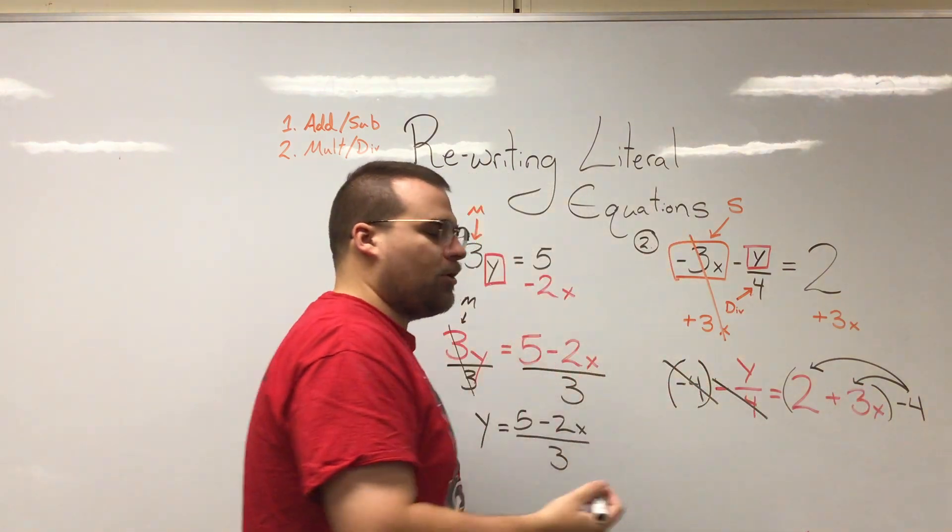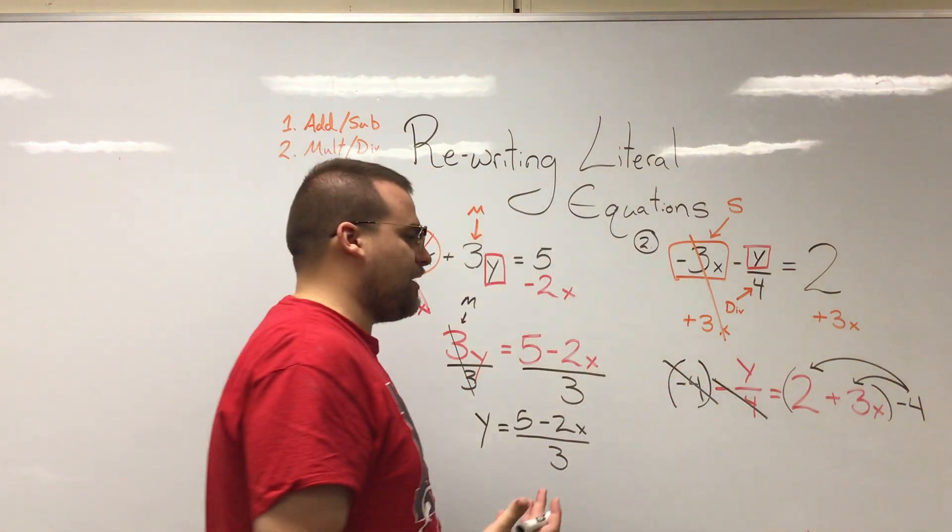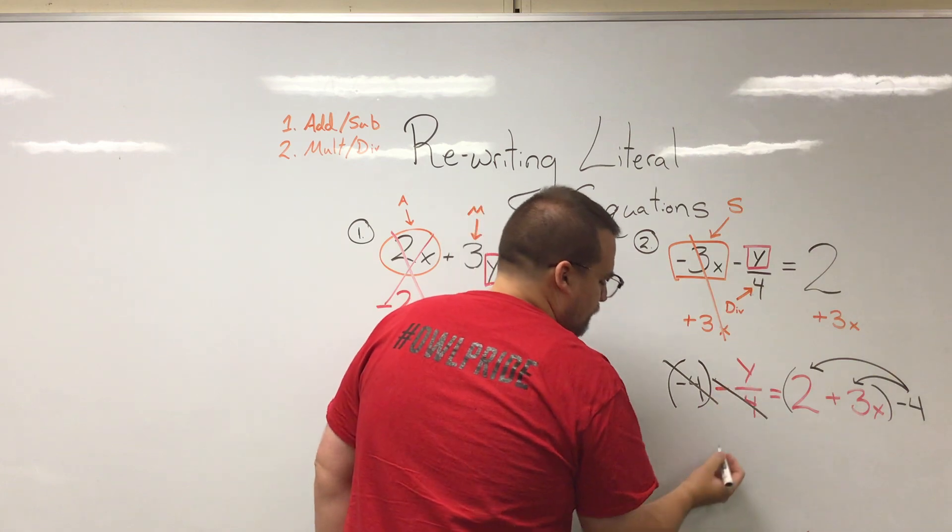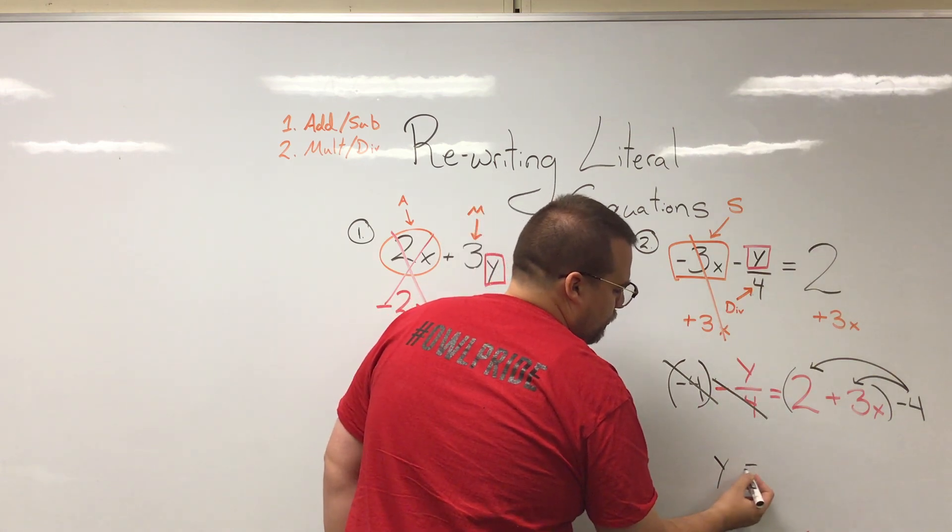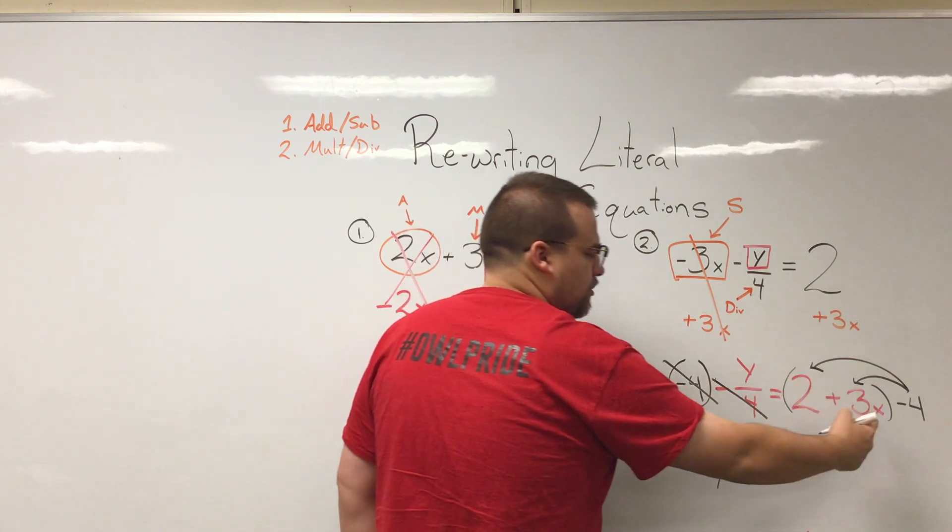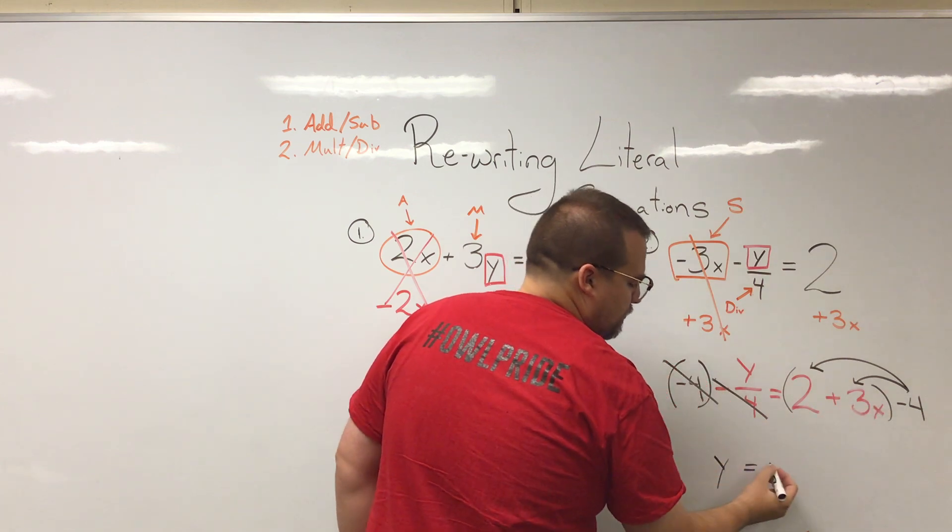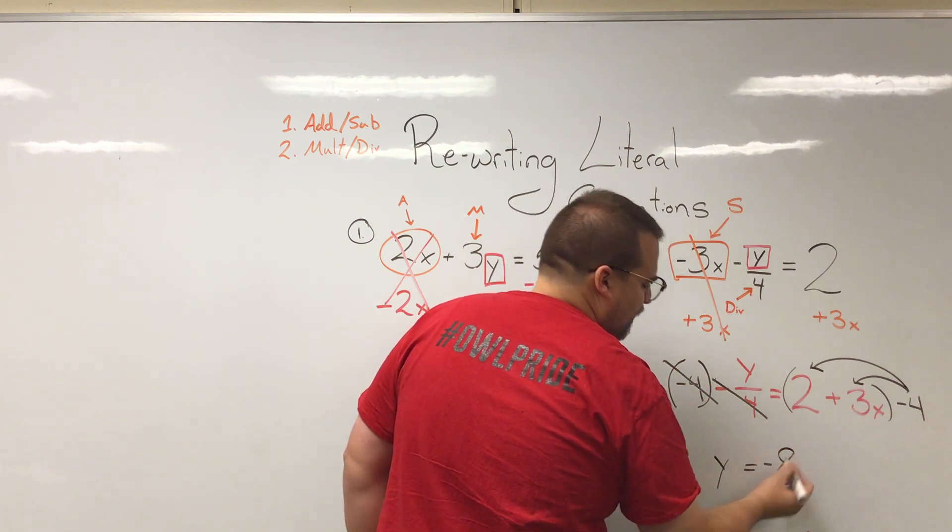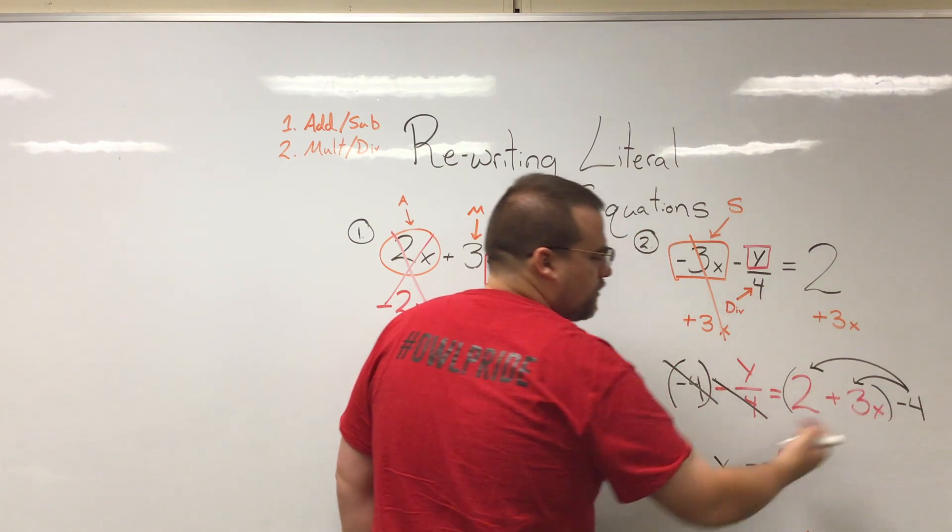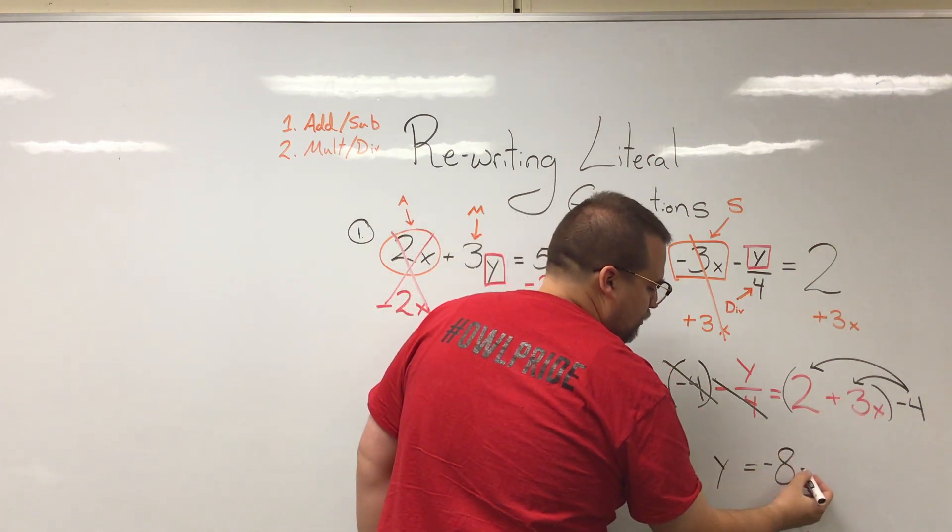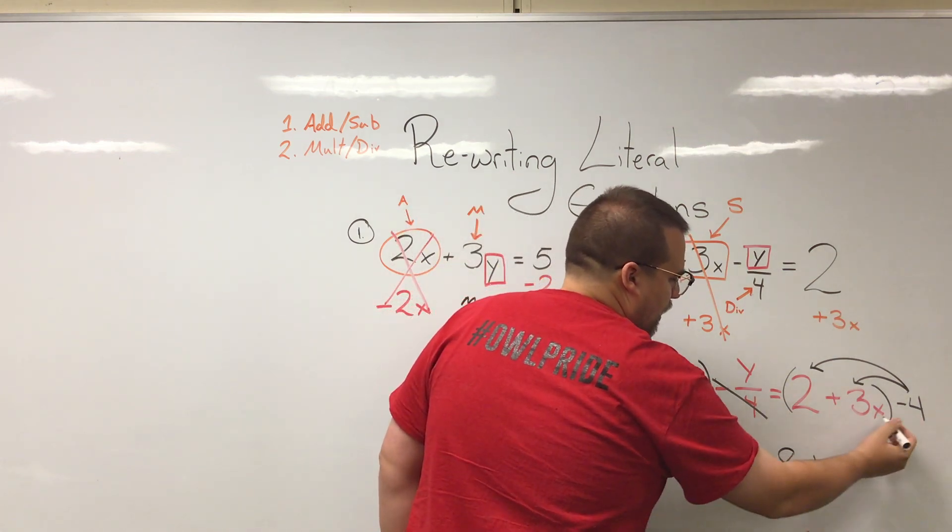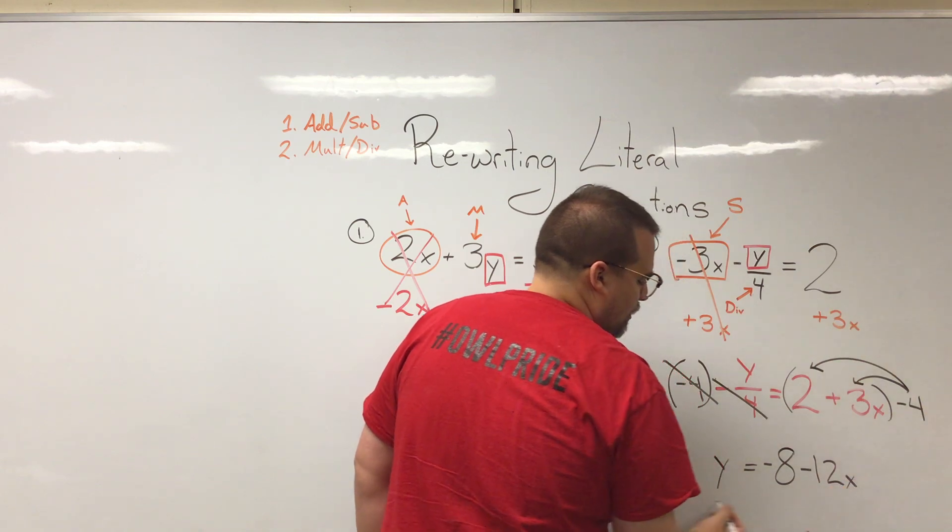So I'm just going to write my y on its own like it is at this point. And then I'm going to distribute. Negative 4 times 2 is negative 8 and negative 4 times 3x, well negative 4 times 3 is negative 12 and then we have an x there. So y is equal to negative 8 minus 12x.